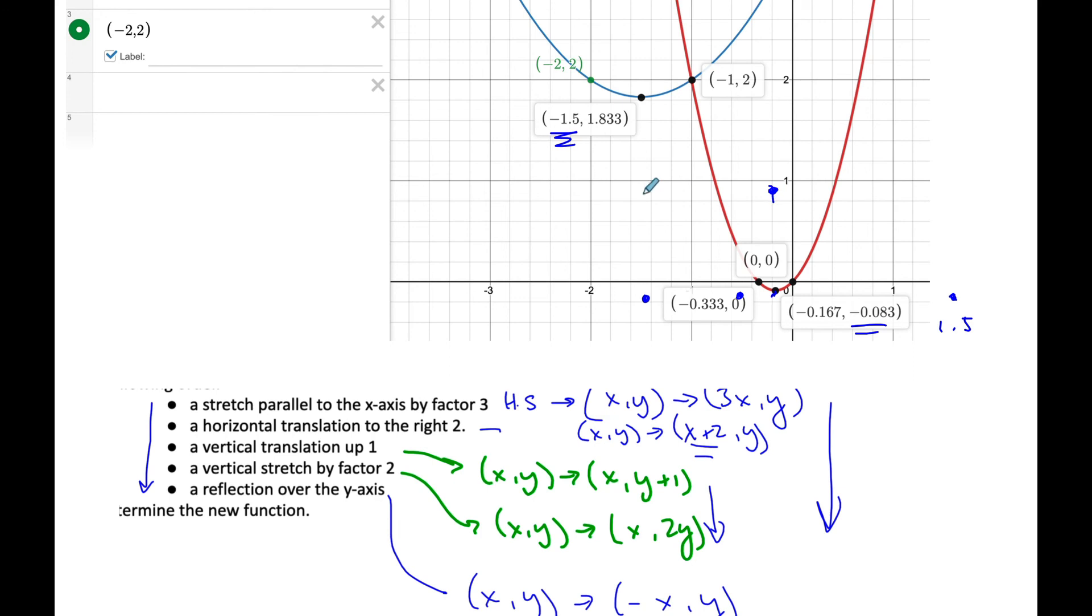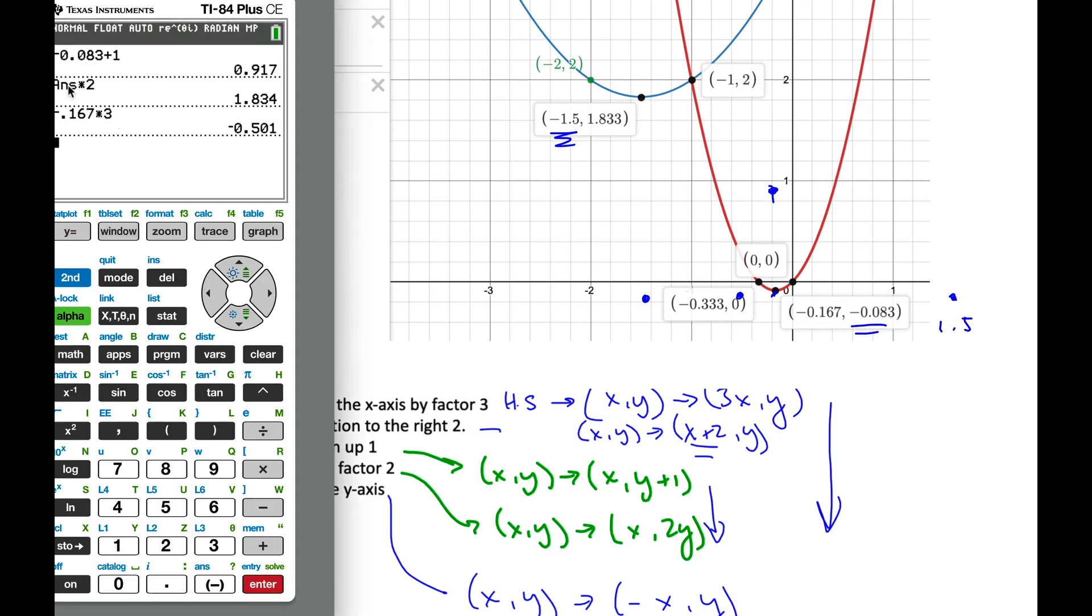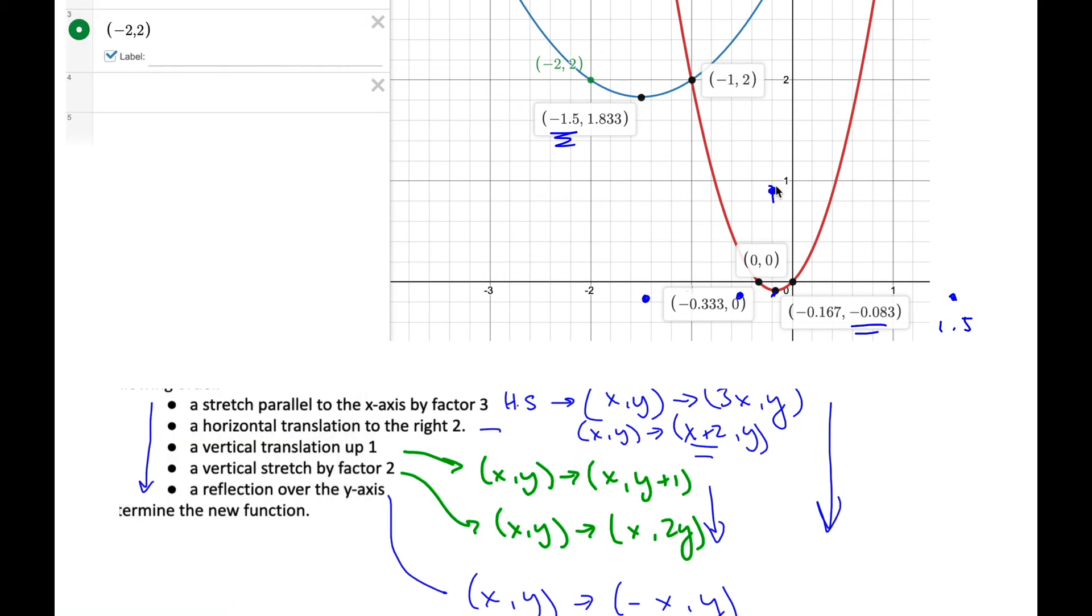And then I take that y value and I multiply it times 2, which you can see I did here, which gives me 1.834. So it goes up here to 1.834, which is my vertex here. And so my vertex has clearly gone to here. And so you can see the transformation works.